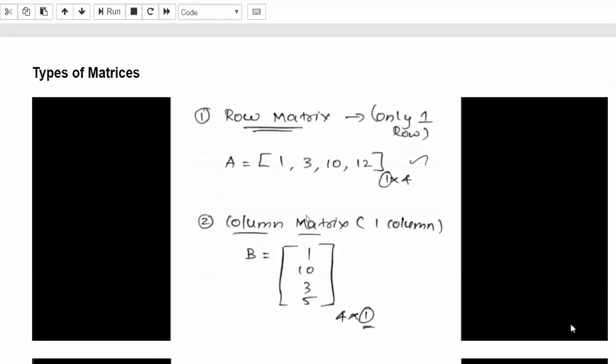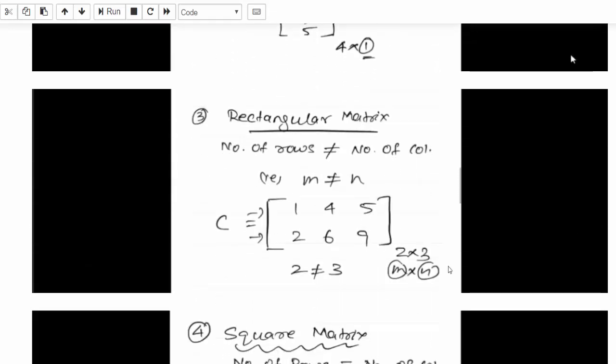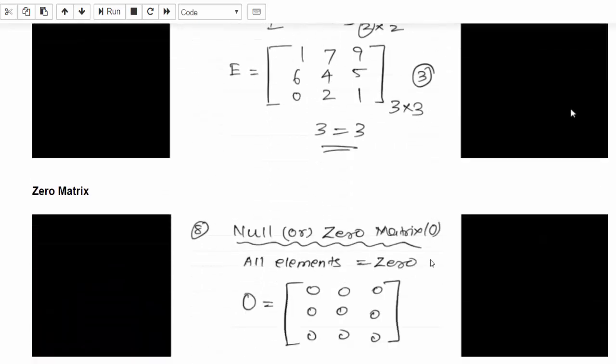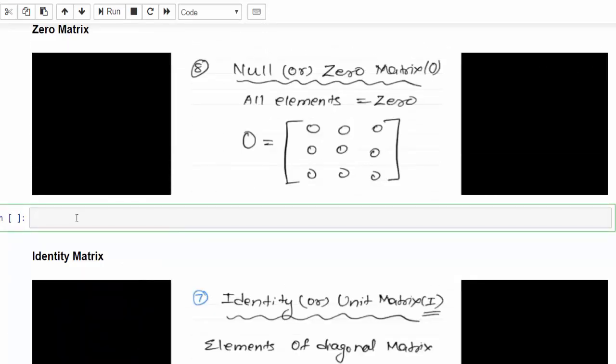The types of matrices: first one row matrices, it's a single row, very easy and self-explanatory. Then column matrix which contains one column. Rectangular matrix means the number of rows and columns are not same, and square matrix means the number of rows equal to number of columns. It's very basic, so didn't implement code for it.